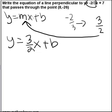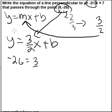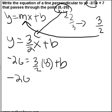Again, we're in that situation where we have a point that goes on this line so we can substitute the x and the y in to get the b. So negative 26 equals 3 over 2 times 8 plus b. One equation, one unknown. Just solve for b.